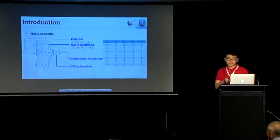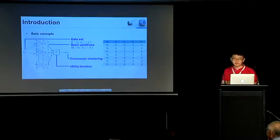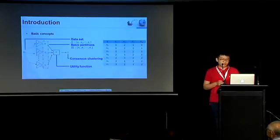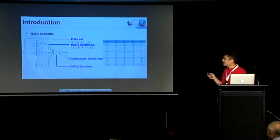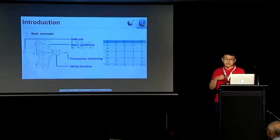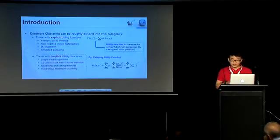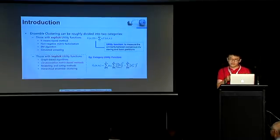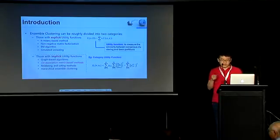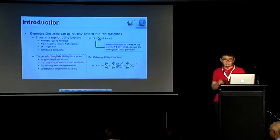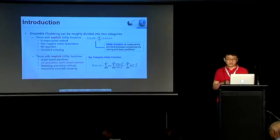Here we use this figure to illustrate the basic concept of Ensemble Clustering. Given a data set, capital X, and a set of basic partitions, capital Pi, the Ensemble Clustering method will output consensus clustering, which is Pi here, by exploiting some utility functions. The utility function measures the similarity between the final consensus partition and the basic partitions. That's why we can use the utility function to find the final ones, which most agree with the basic ones.